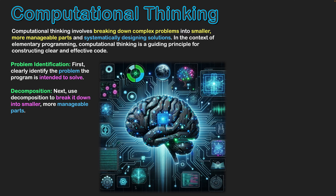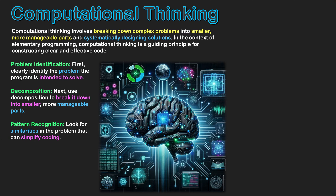Decomposition is such an important part of the computational thinking process. The next step is pattern recognition — looking for similarities in the problem which can simplify code. When we see areas of the problem that are similar to other areas, we can potentially reuse code or implement control structures such as selection and repetition that assist in streamlining execution. We can also use our library of modules that we already have in existence and apply them straight away, minimizing the amount of coding we need to do. We don't want to be developing all our code from scratch; reusing and making efficient code does less typing and allows the program to run more efficiently.